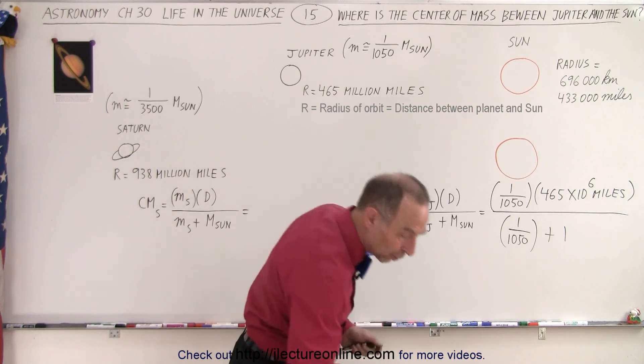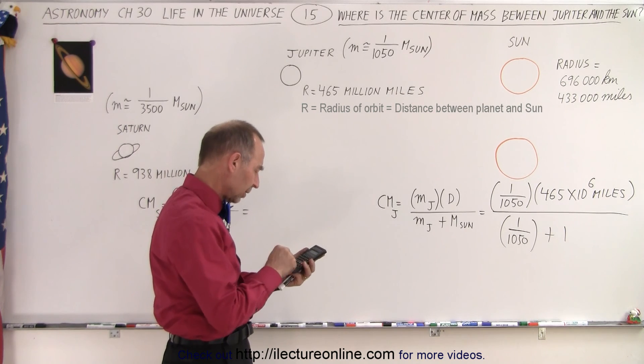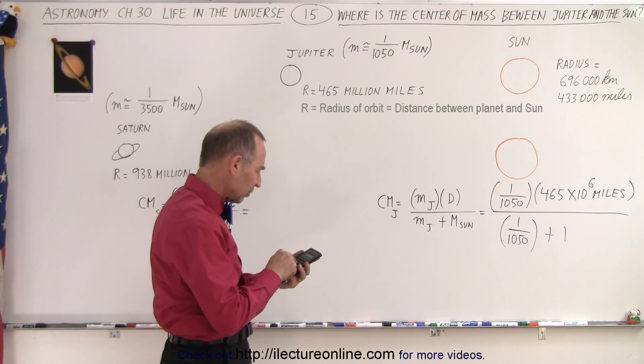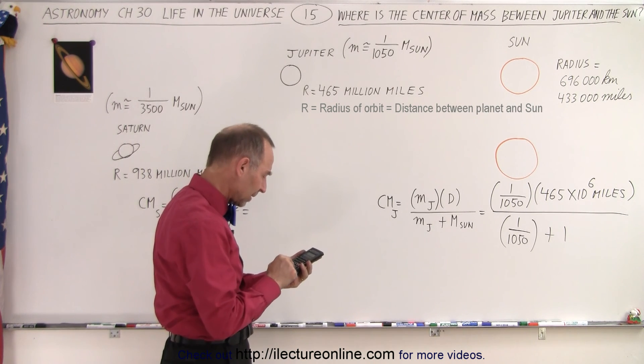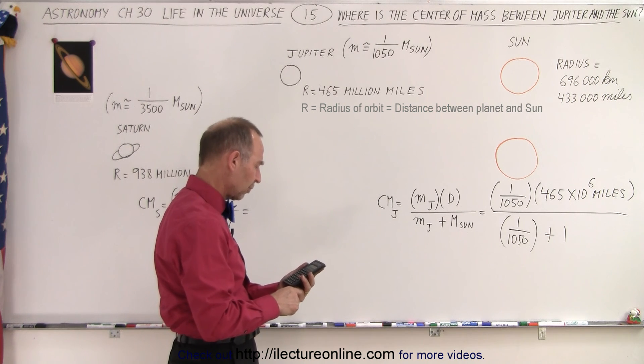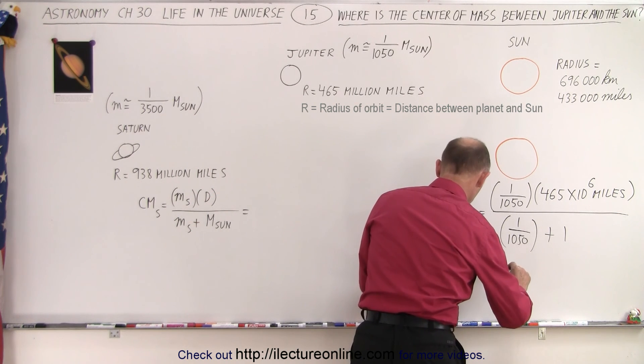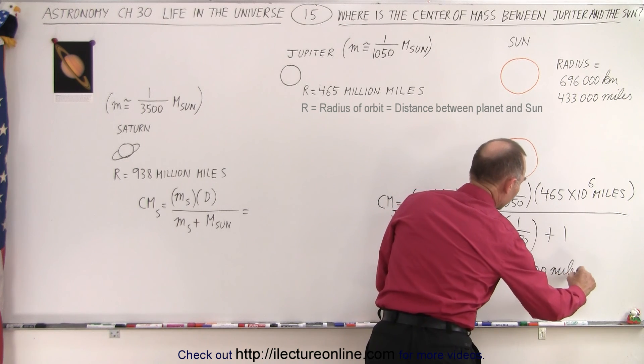So what is that equal to? So we add 1 plus 1 divided by 1050, and then we move that to the numerator, then we multiply that times 465 million, e to the sixth, and then we multiply that times 1/1050, so divide by 1050, and we get 442,000 miles. So that would be equal to 442,000 miles, because we did this in miles.